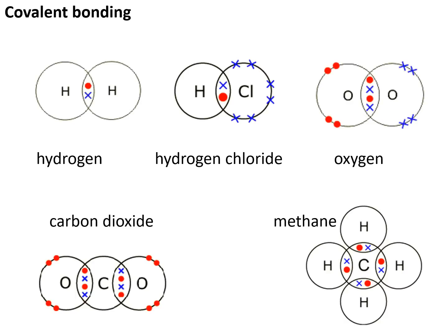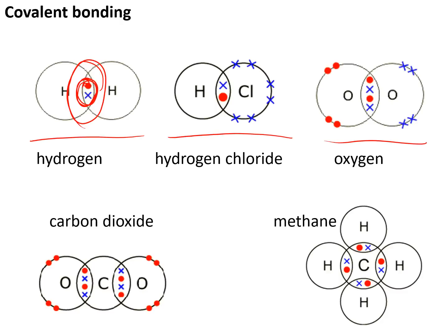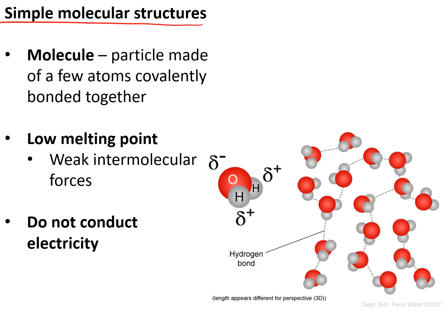Covalent bonding involves sharing electrons, as shown in the diagram of hydrogen — that shared pair of electrons in the middle is a covalent bond. You need to memorise these diagrams for hydrogen, hydrogen chloride, oxygen, carbon dioxide, and methane. If you cannot remember the diagram, at least draw a few overlapping circles with some pairs of electrons in the overlapping bits — that's quite likely to get you a mark. Some covalent compounds form simple molecular structures made of molecules — a molecule is a particle made of a few atoms bonded covalently. They have low melting points because neighbouring molecules are held together by weak intermolecular forces, and they do not conduct electricity because they have no free electrons.